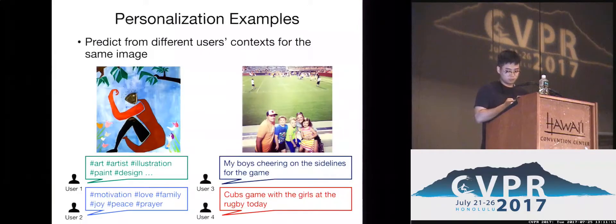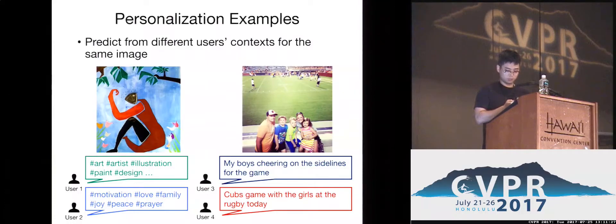These are generation examples from different users for the same image. From the left, user 1 generates art-related hashtags. In contrast, user 2 generates sentimental hashtags. From the right, user 3 generates captions about their family, but user 4 generates about log B.